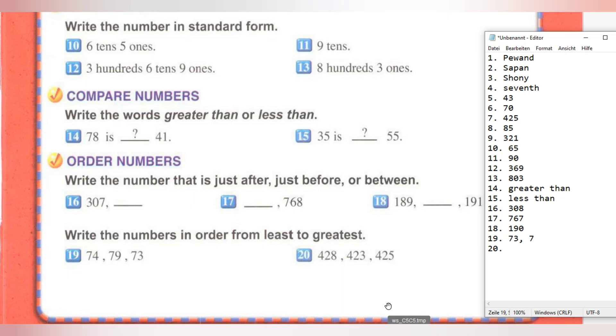Tasks 19 and 20: Write the numbers in order from least to greatest. Task 19: 74, 79, 73. The smallest is 73, after it comes 74, and then 79.